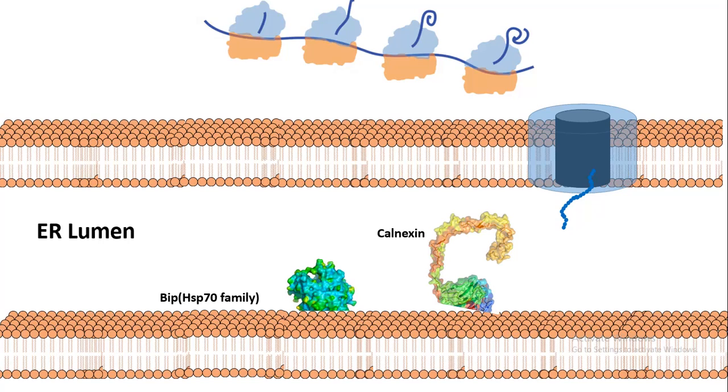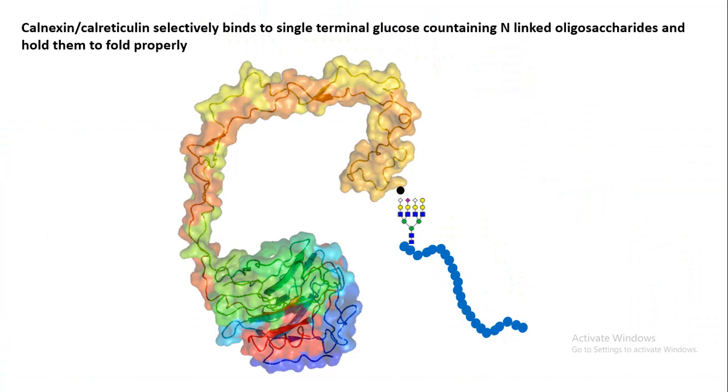Inside the ER lumen there are protein folding machineries known as chaperones. There are calnexin, calreticulin, and BiP, which is an HSP70 family chaperone. All these chaperone proteins have different roles in protein folding. Calnexin folds the proteins into proper conformation and helps refolding of misfolded proteins, whereas BiP holds the protein in an unfolded conformation waiting for the proper time to arrive when the protein should be properly folded.